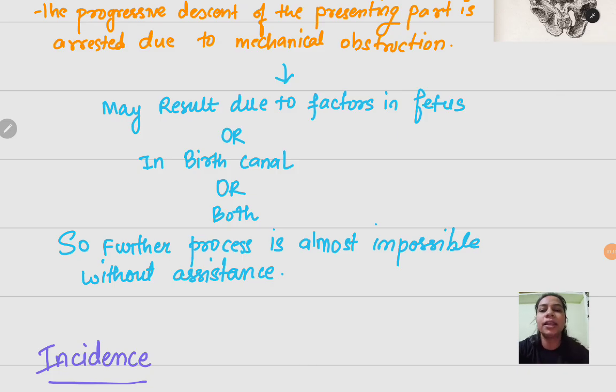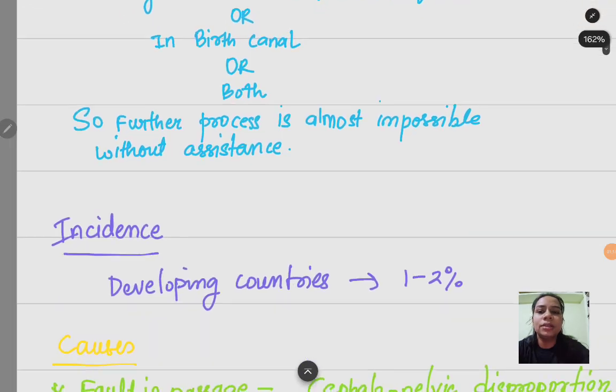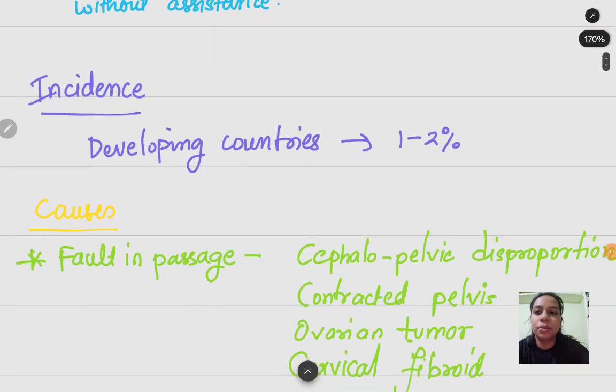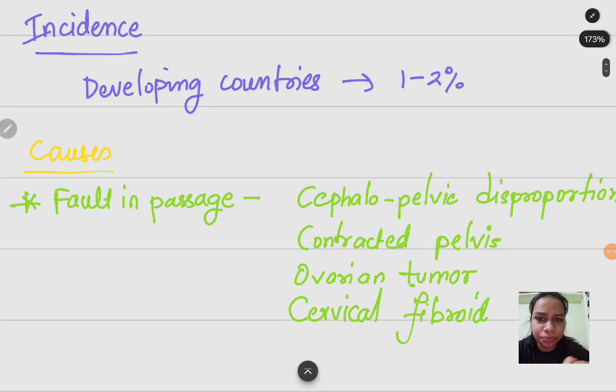This is called obstructed labor. Its incidence in developing countries is one to two percent. Then we will see the causes. The fault can be in the child or in the mother as well.